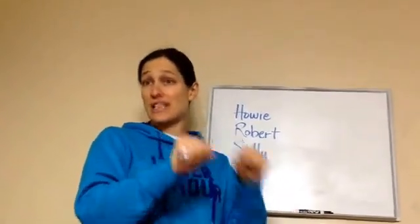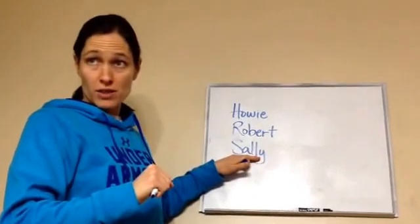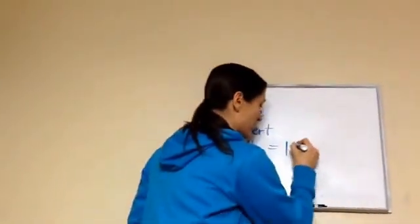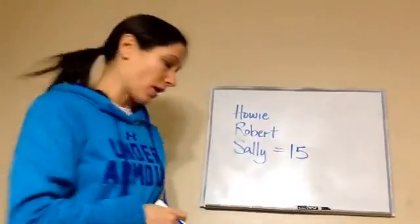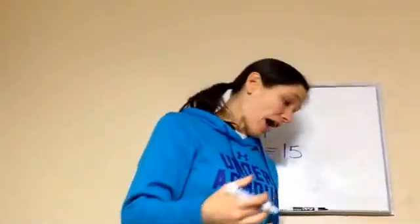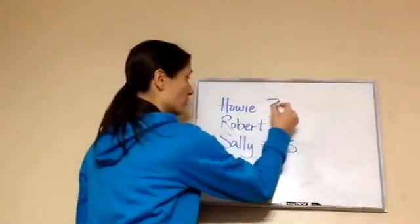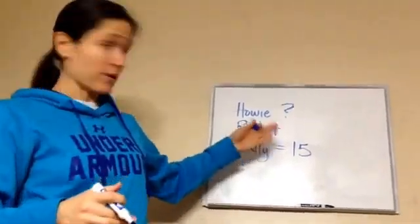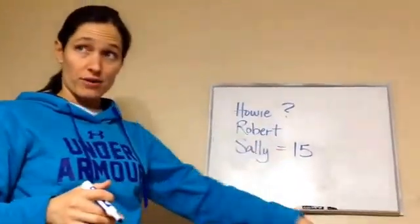That tells us a definite. We have to know the definite in order to answer the rest of them. So we know that Sally is 15 years old. Now, the question for the problem is how old is Howie? They don't really care about Robert, but it's probably going to help us.